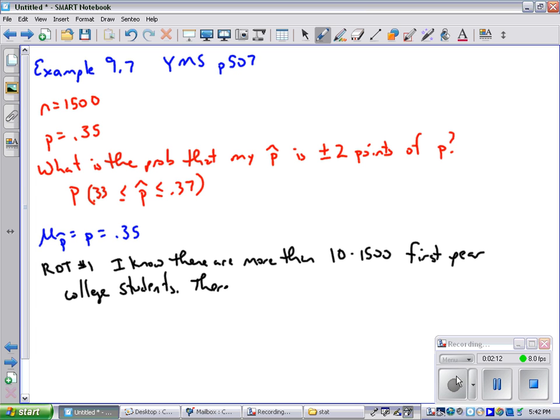Therefore I can use the rule that the standard deviation of p̂ is pretty close to the square root of P times (1 minus P) over n, which in this case is the square root of 35 percent times (1 minus 35 percent) over 1,500, which turns out to be 0.0123.